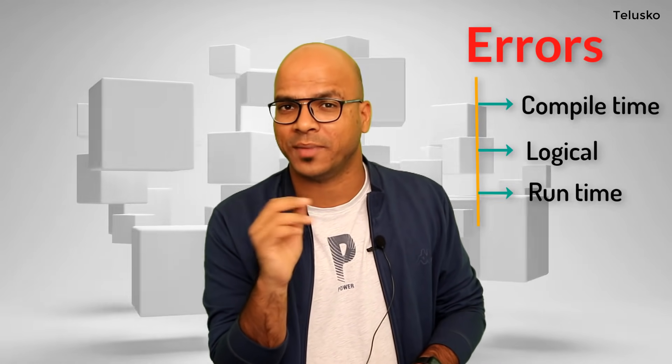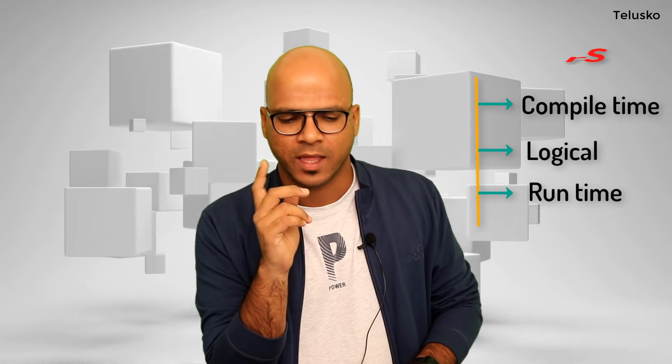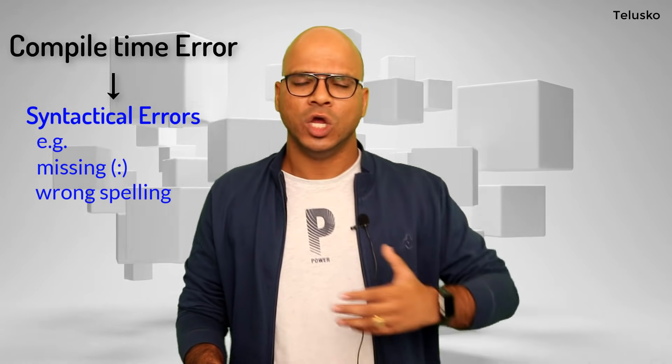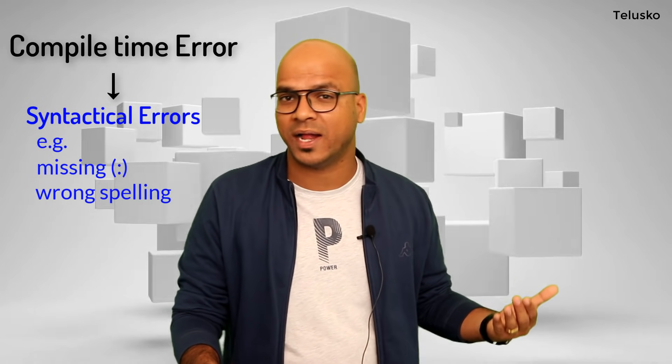We have three types of errors in general. The first one is compile time error, the second one is logical error, and the third one is runtime error. If you write code and one statement has a syntax error — like forgetting the colon after an if statement, or misspelling print — those are syntactical errors, also called compile time errors because you get them at compile time.